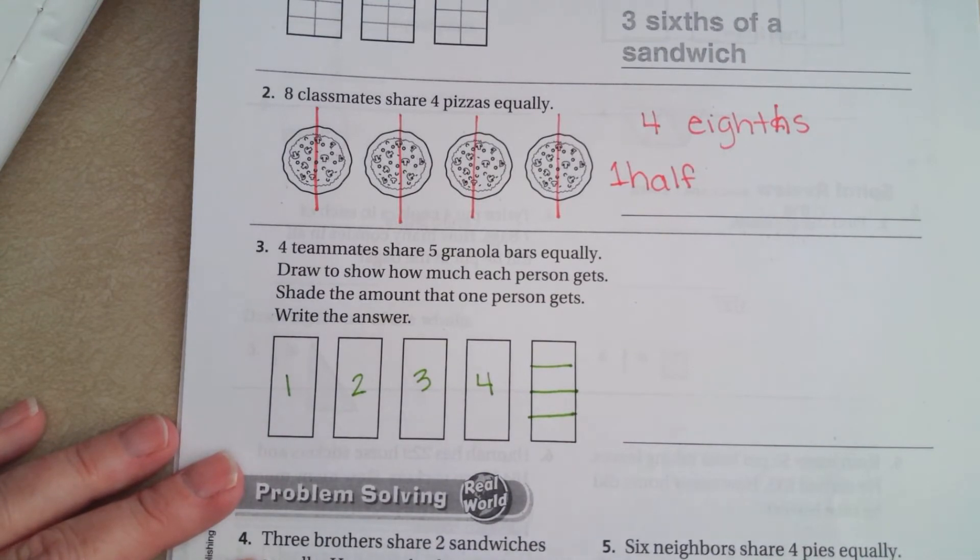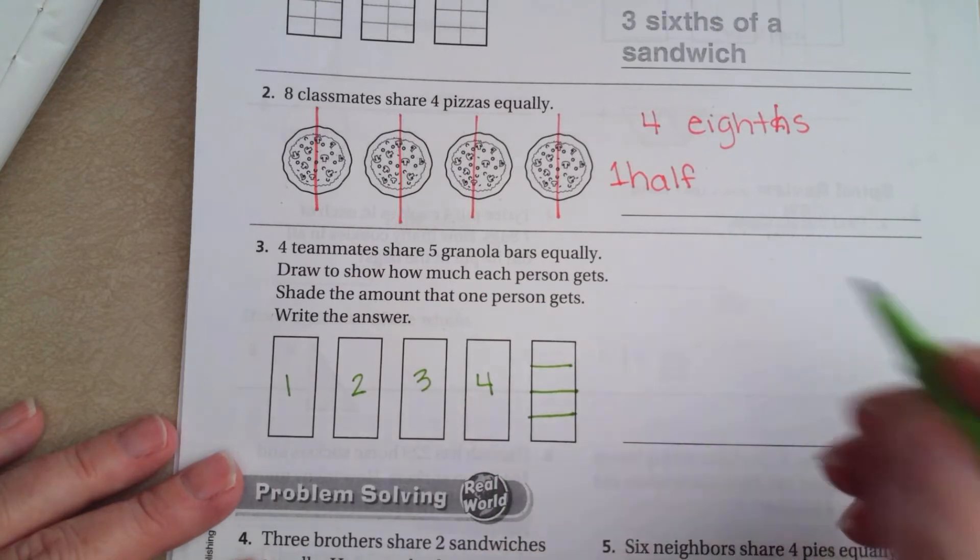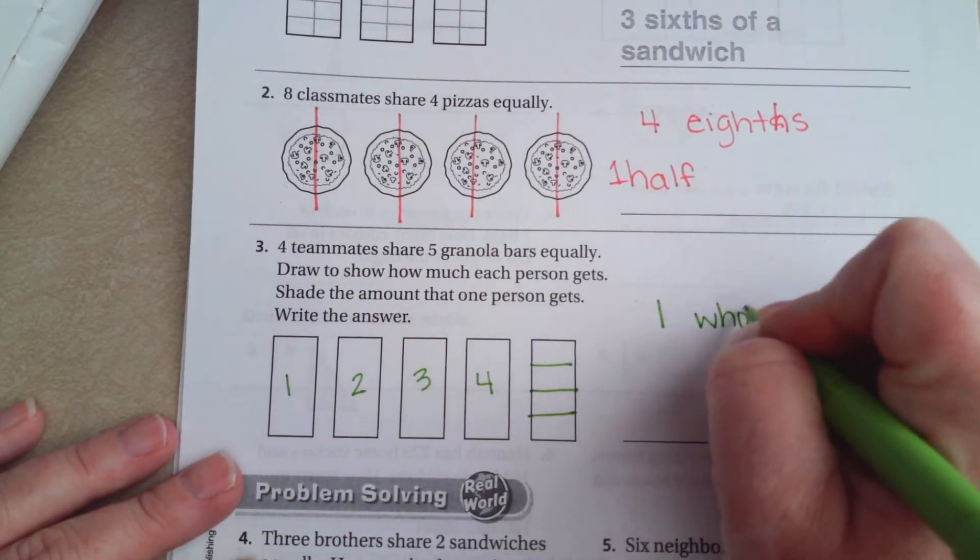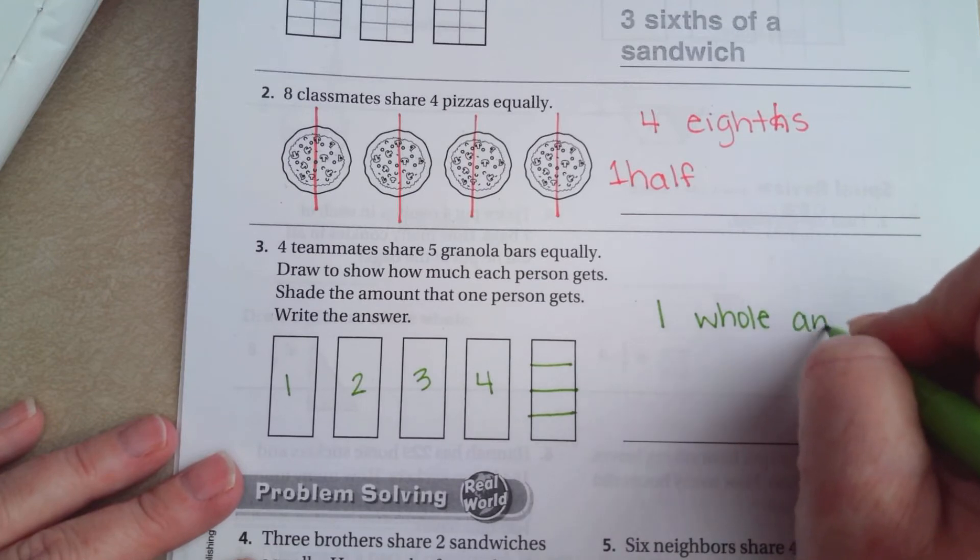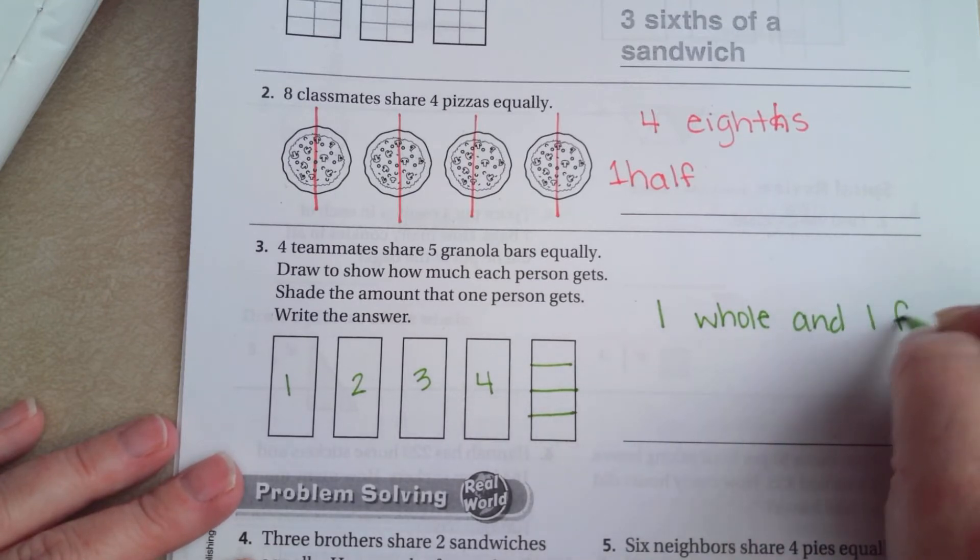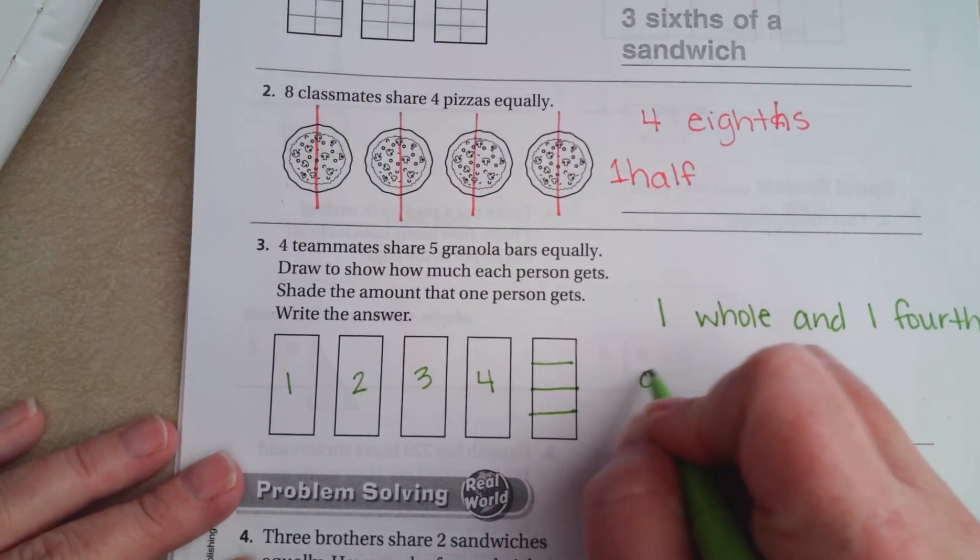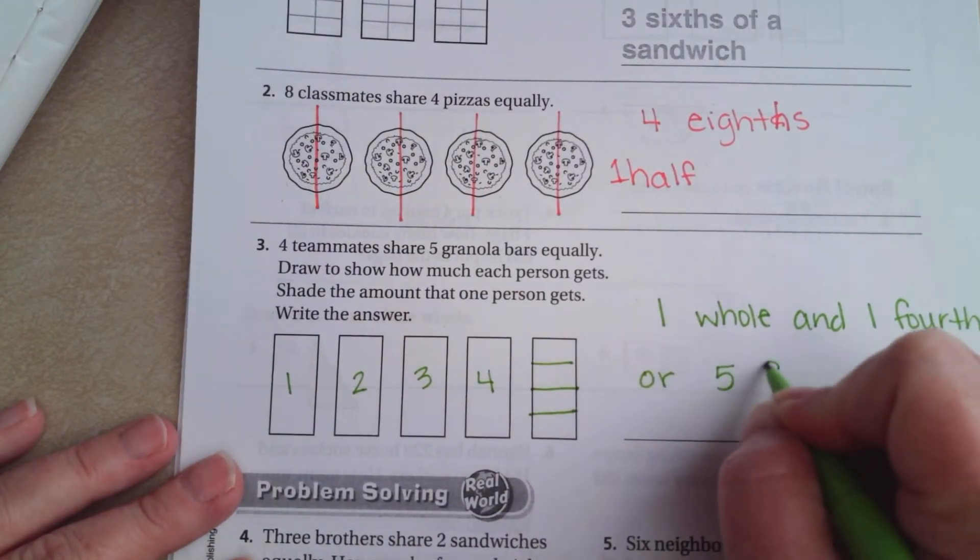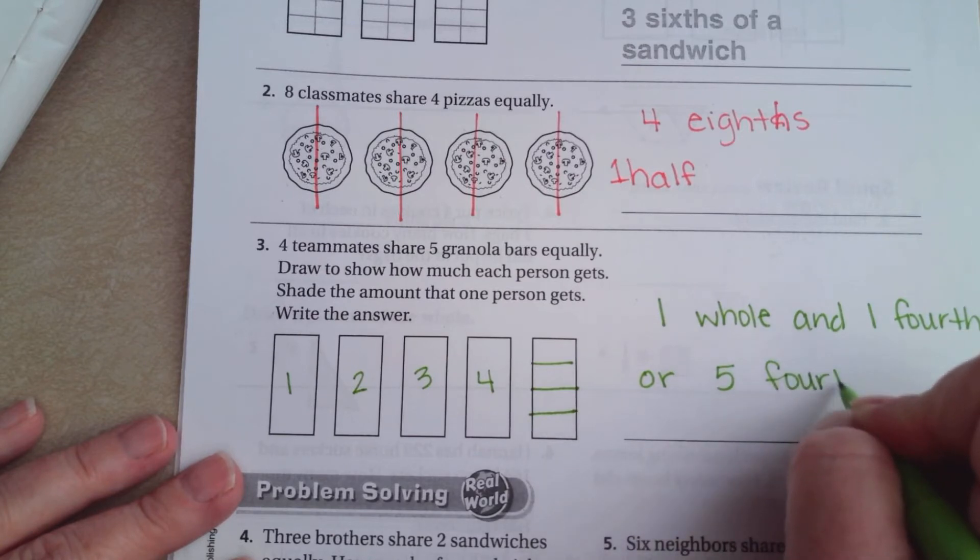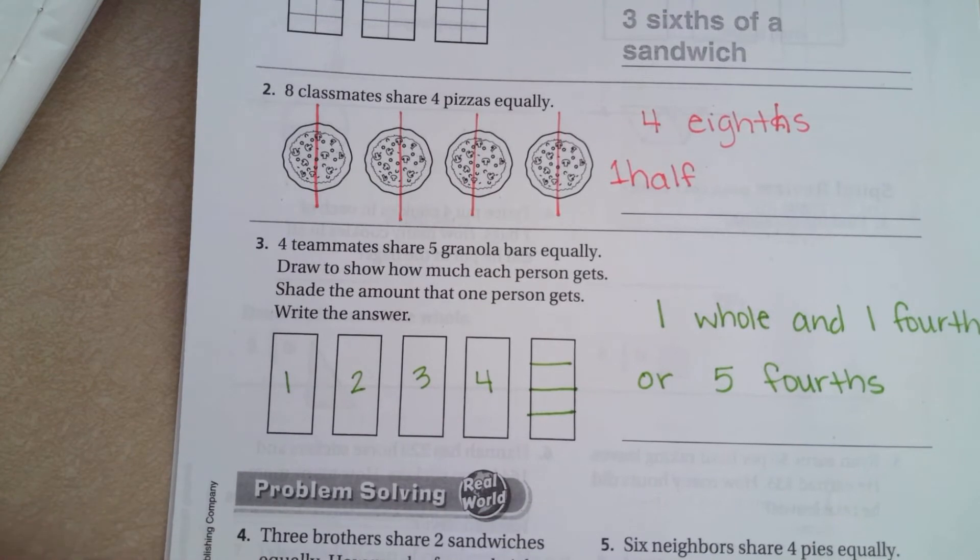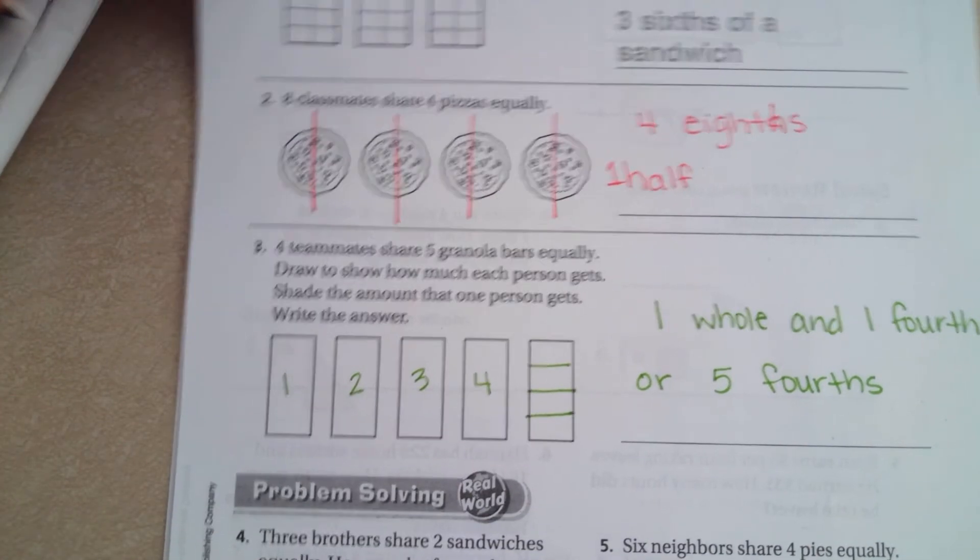So, each person would get 1 whole 1 and 1 4th. So, 1 whole and 1 4th, or we could put 5 4ths. Totally your choice there.